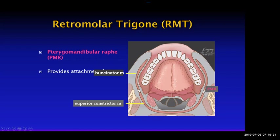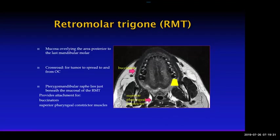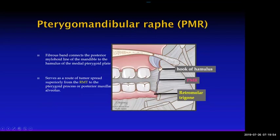There's a structure called the pterygomandibular raphe, which lies just beneath the mucosa of the retromolar trigone. This structure provides attachment to the buccinator muscle and also connection to the superior constrictor muscle. On imaging, you can see the buccinator muscle and the superior constrictor muscle more posteriorly. The yellow triangular region represents the retromolar trigone.